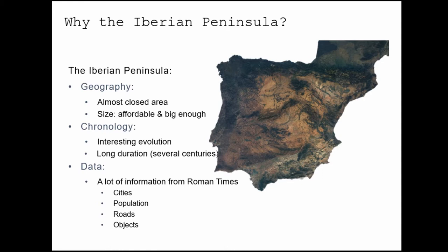At the same time, we know that the chronology of the history of this territory is very interesting over the centuries, because we have different patterns of government — from Roman times when the metropolis is outside of this territory, from the medieval times when we have different kingdoms and a very conflictive moment, then the modern times with the first centralist monarchies, and finally in the 19th century with the creation of the first railway. So we have a lot of different moments in this territory that could show some differences in its organization. And also because we have a lot of data — mostly for Roman times — we know a lot of cities, population, roads, and have a lot of material to make comparisons.